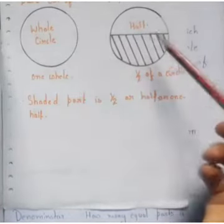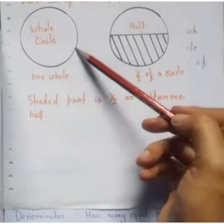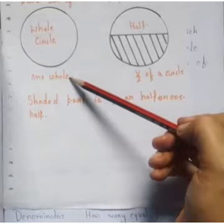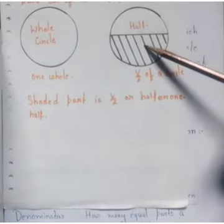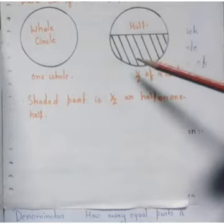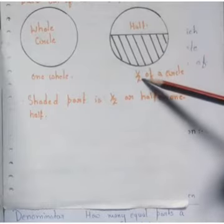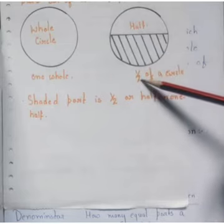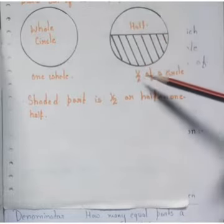Here I have drawn two circles. This is known as your whole circle, or you can say one whole. And here I have divided this circle into two equal parts. So how many parts is this circle having now? Two parts. And how many parts have I shaded? One. So this one by two becomes your fraction. That's why we say that fractions represent a part of a whole.